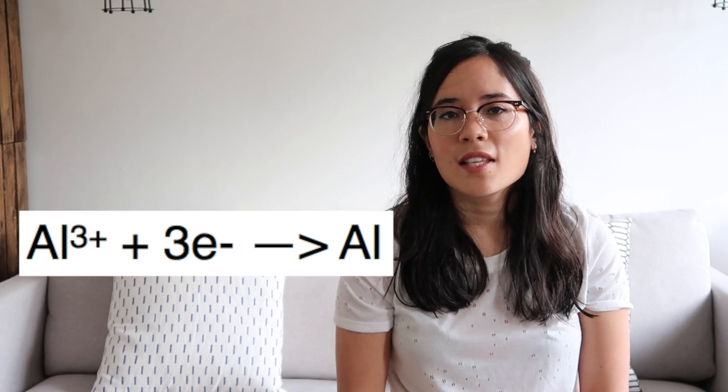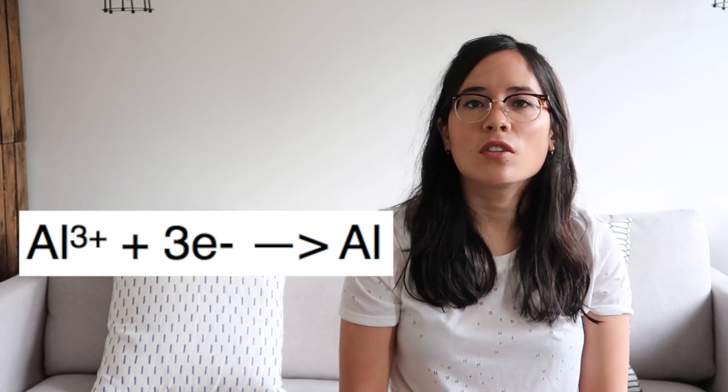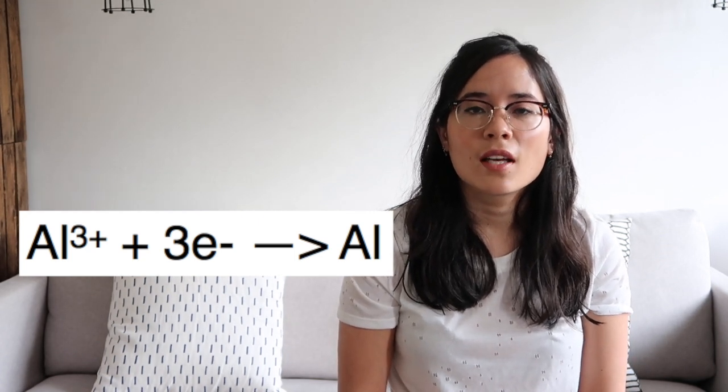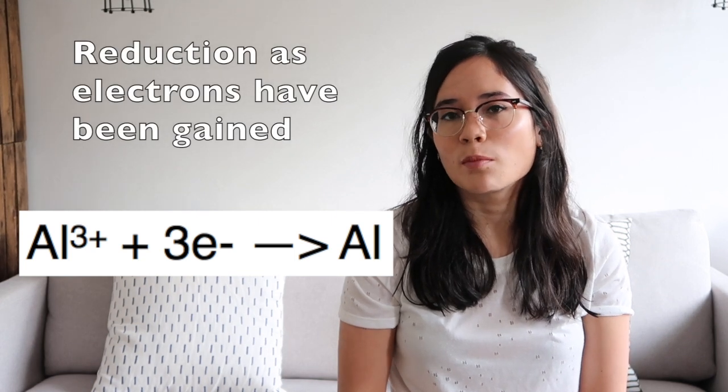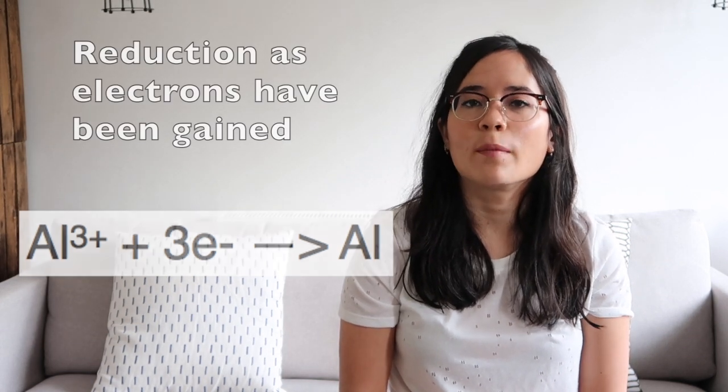Now we're going to focus on specific electrolysis reactions. Starting with the electrolysis of aluminium: what is the ore from which aluminium is obtained? That is bauxite. Which ion discharges at the negative electrode? That's the metal ion — so it's the aluminium. Write the ionic equation. Is this reaction oxidation or reduction and why? This is reduction because you're adding electrons to the aluminium ion to make it just an aluminium atom.